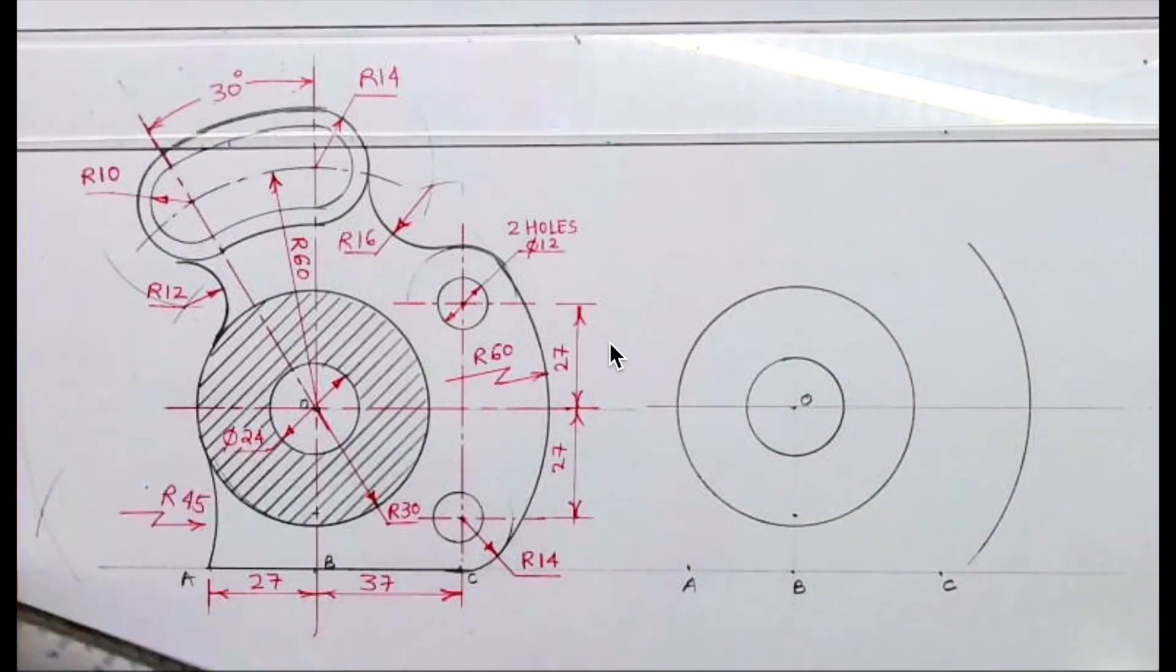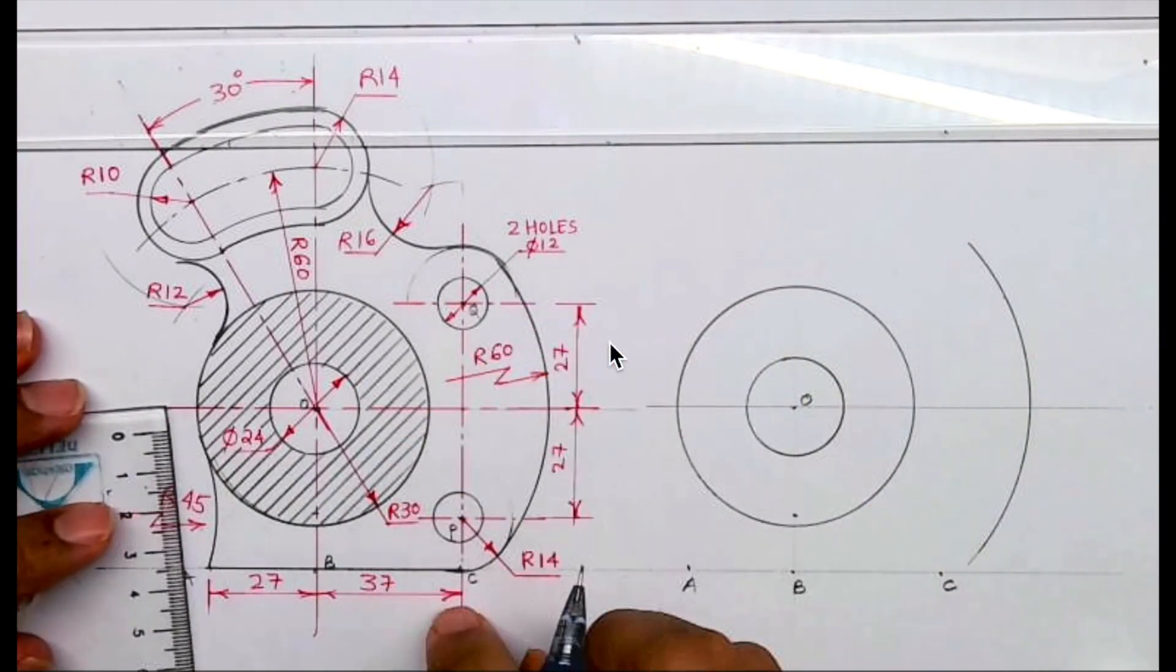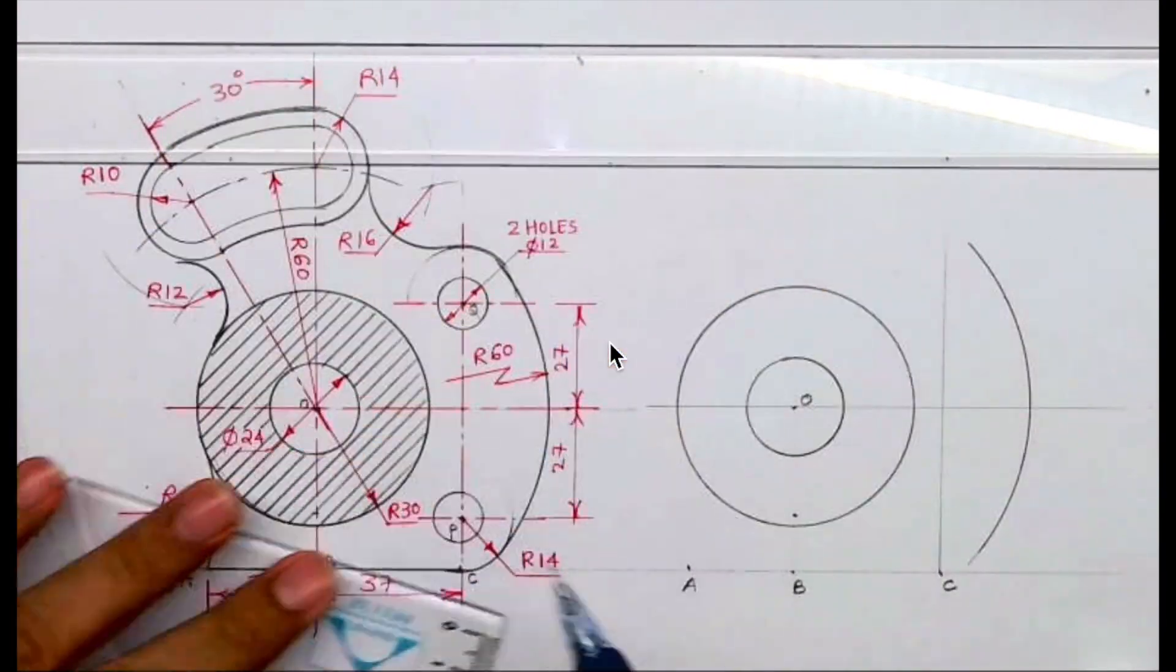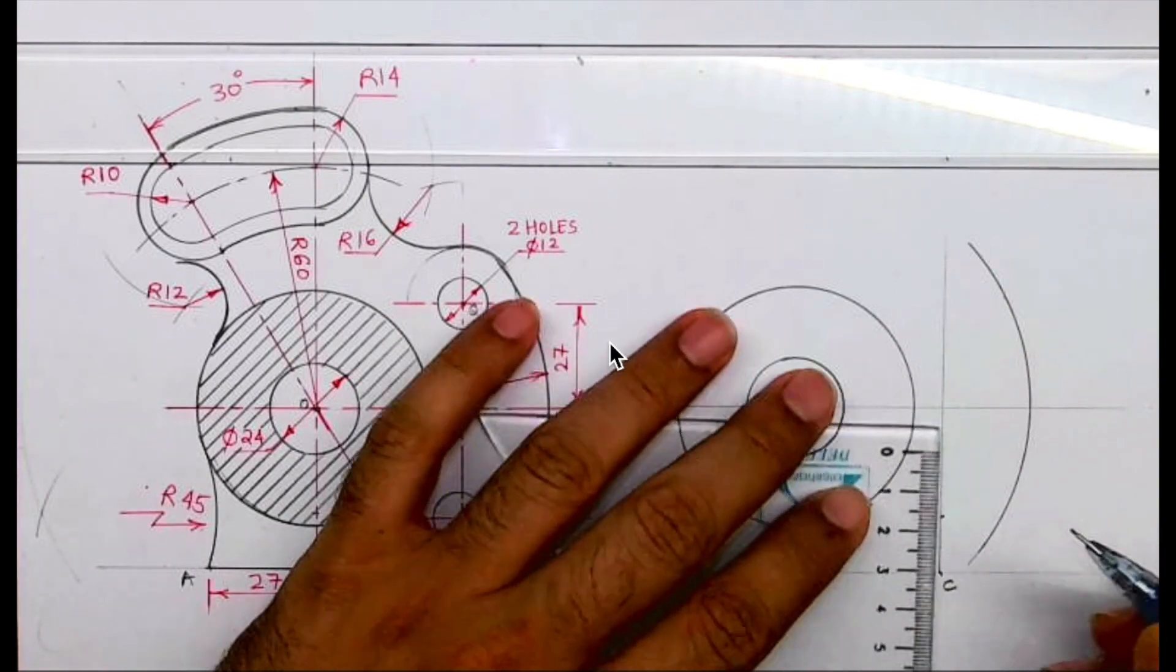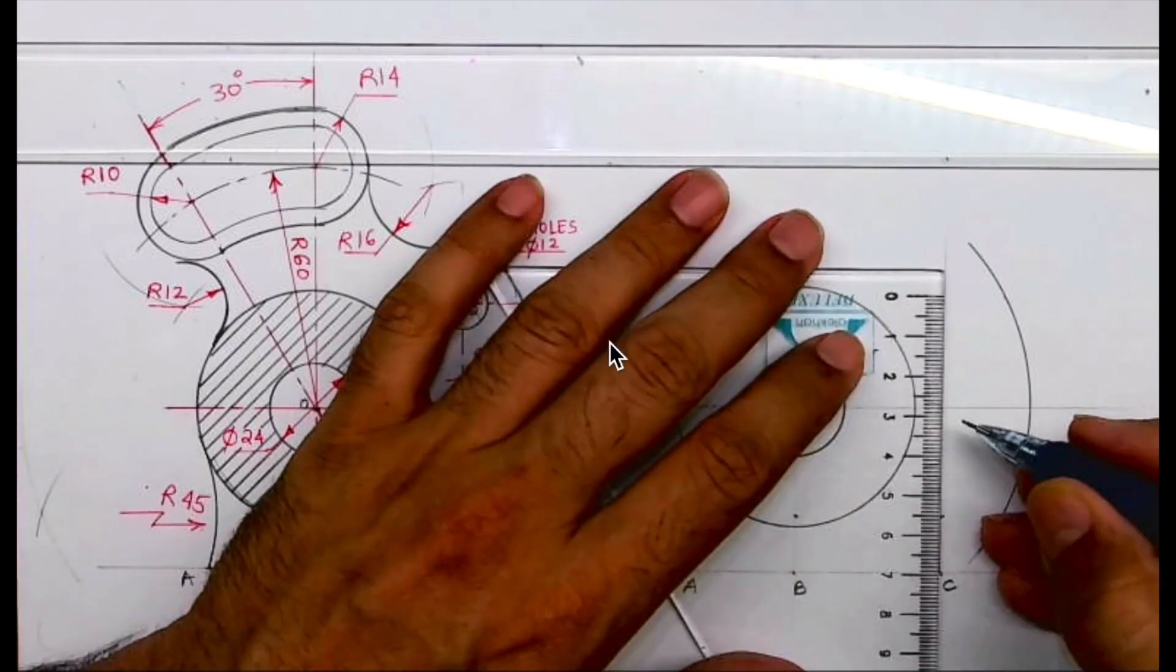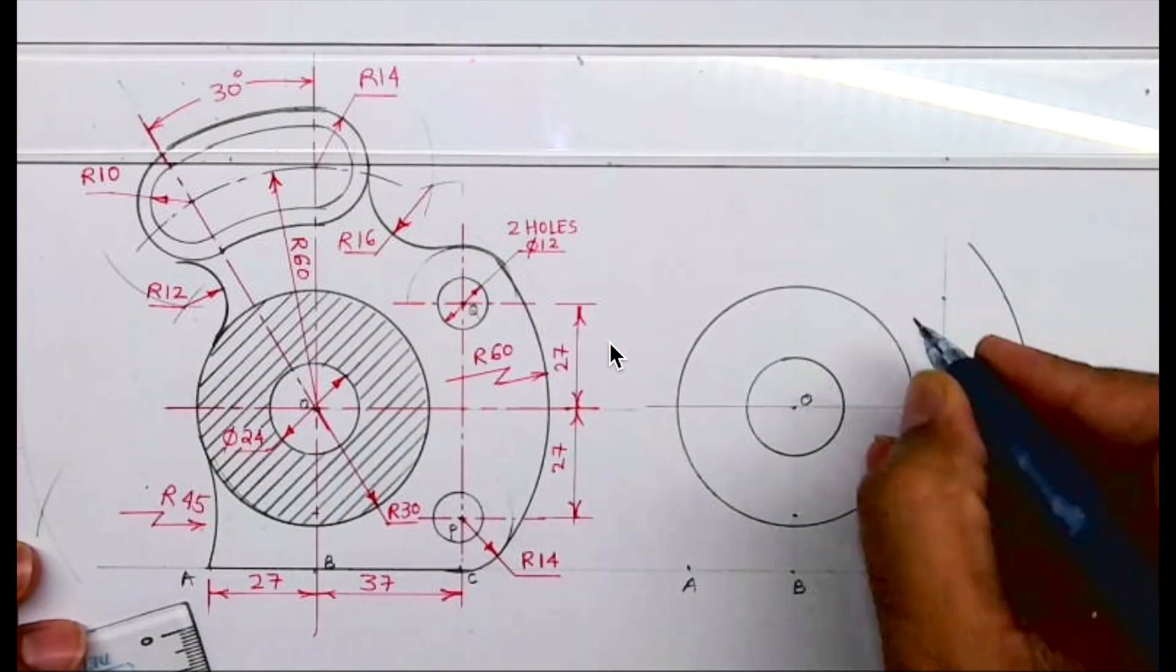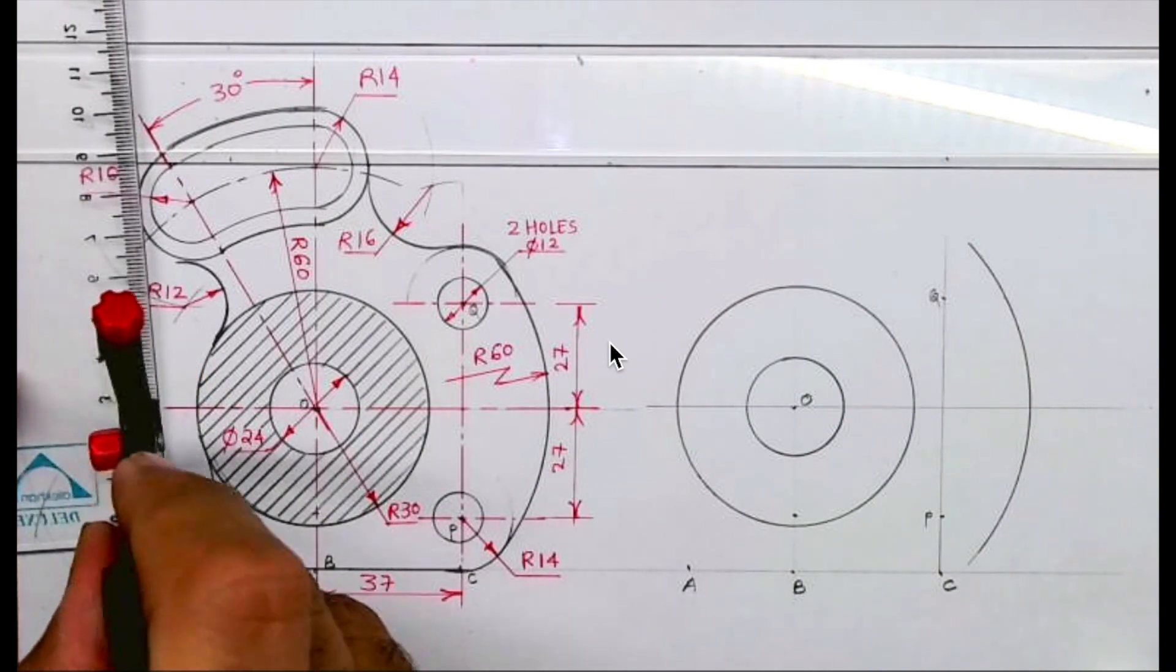Now if you see from C, it is 14 up to point B, and then 27 up to Q. So from C I will draw one vertical line. I will mark 14, 27, then again 27. This is P, this is Q. Now from P and Q we can cut radius 14.